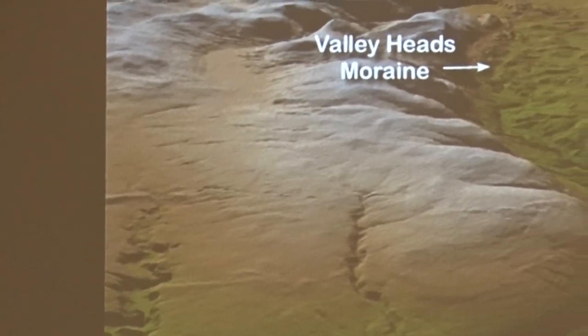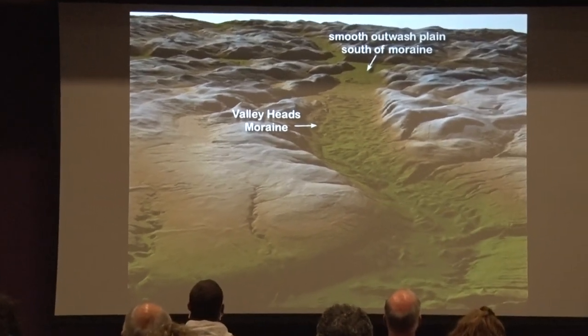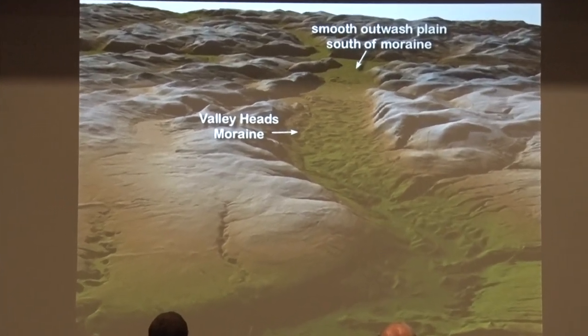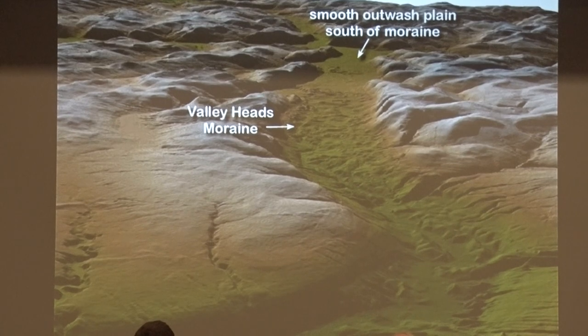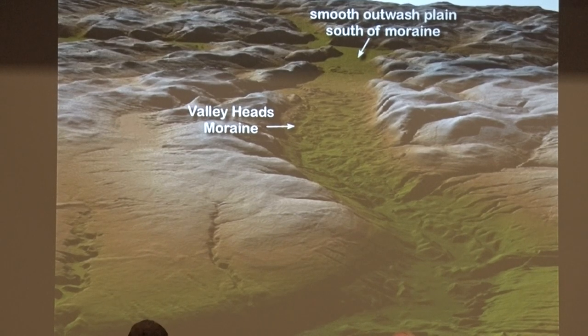Of course, we can look at some of the more modern technology that's used. This is one of the valleys east of us, showing the valley in the lower part of the image, the valley heads moraine — that bumpy, hilly moraine — and then an outwash area where the lake outlet would have been to the south. And this is over by Ithaca, New York, that particular valley.